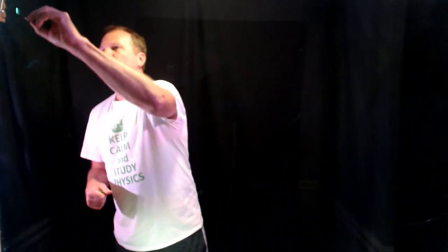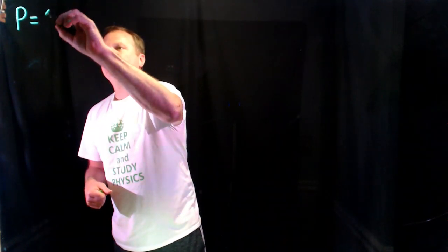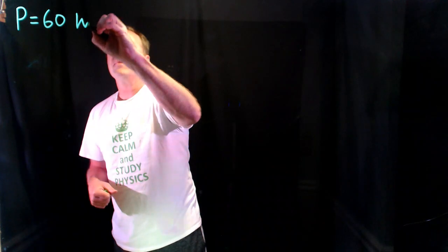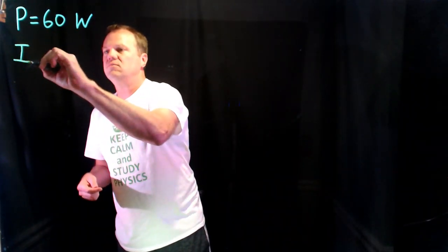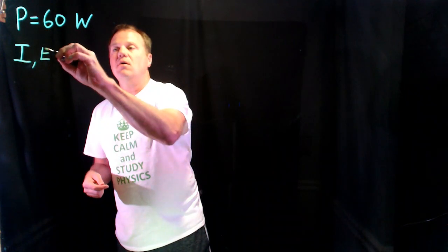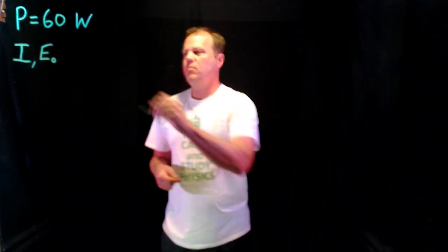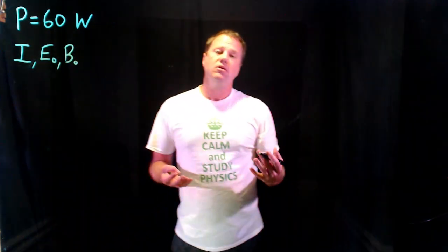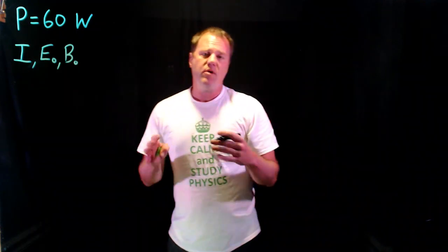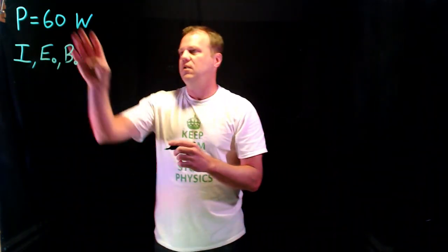I'm going to show you how to calculate the properties of light emitted from a light bulb. We have a 60-watt light bulb and we're going to measure it at a distance of 2 meters away. I want to predict the intensity of that light at 2 meters, the magnitude of the electric field, the magnitude of the magnetic field, and approximately the number of photons emitted per second by this light bulb.